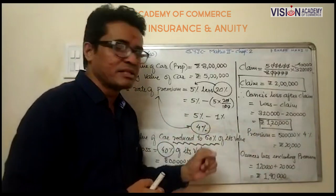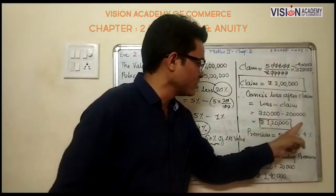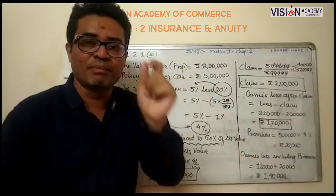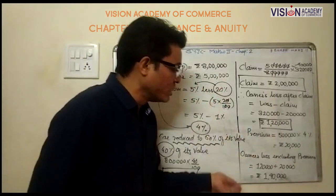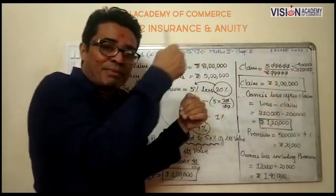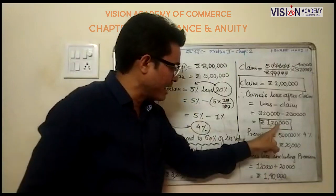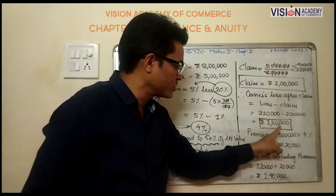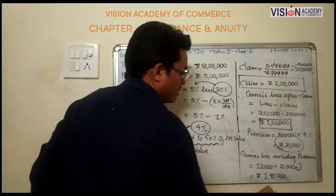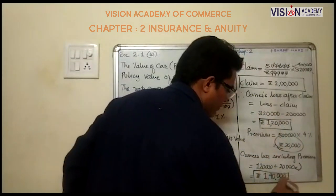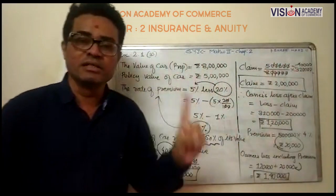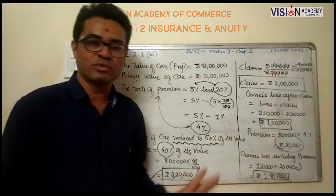Premium is calculated on policy value: 5 lakhs into 4 percent comes to rupees 20 thousand. As per the requirement, owner's loss including premium: the owner's loss is 1 lakh 20 thousand, and with premium the total loss is rupees 1 lakh 40 thousand. So owner's loss including premium is rupees 1 lakh 40 thousand.